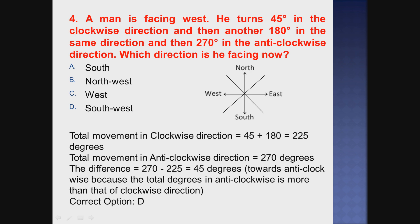Question number 4. A man is facing west. He turns 45 degrees in the clockwise direction, and then another 180 degrees in the same direction, and then 270 degrees in the anticlockwise direction. In which direction is he facing now?